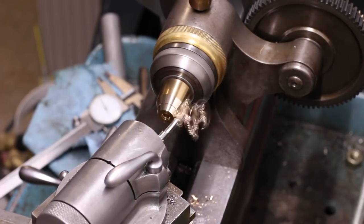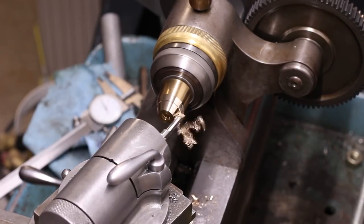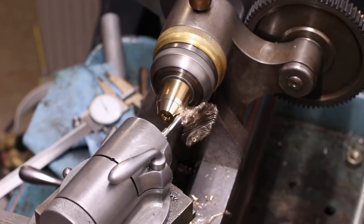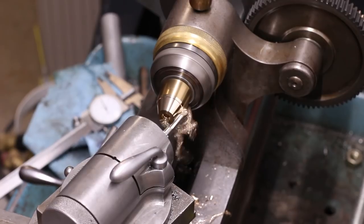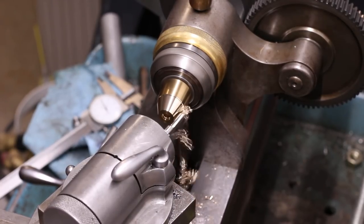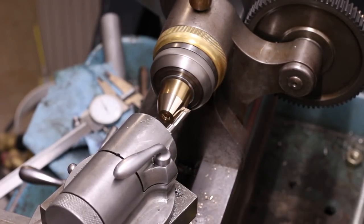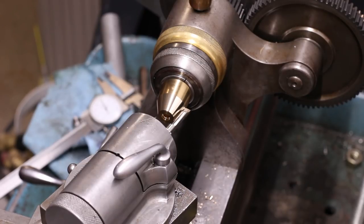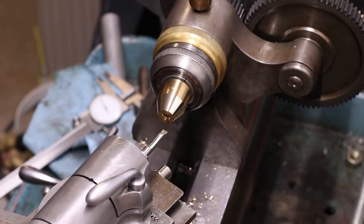Obviously you want to be pretty careful running your lathe in reverse, taking any sort of cut at all. In this case I was using a collet, but if you happen to be using a threaded chuck, you risk unthreading the chuck from the spindle.